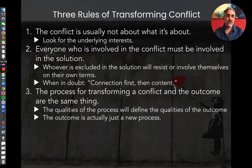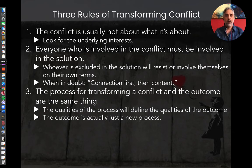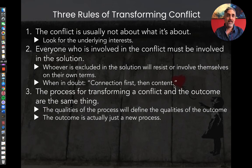This brings us to the three rules of transforming conflict — you can find these at duncanautry.com/three-rules. The first rule is: remember the conflict is usually not about what it's about. The debate's not about who wins an election; it's actually about what do we want the future of our country to be. It's not about who cleaned the dishes or didn't clean the dishes — it's actually about respect, consideration, mutual acknowledgement. There's always something else there. So figure out what the deeper personal human interests are behind every conflict — it helps a lot.